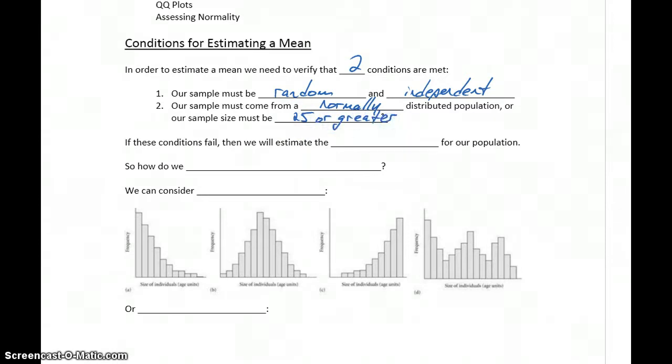Or we'll need to have a sample size of 25 or greater. So when we get into estimating means, the first thing we'll check is sample size. If that's large enough, great. If not, we'll need to determine whether our sample comes from a normal population. If those conditions aren't met, then we'll turn to estimating the median for our population.